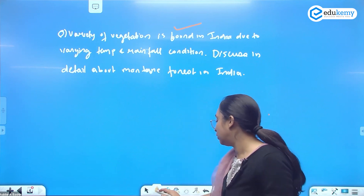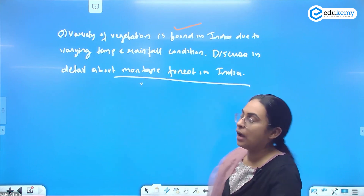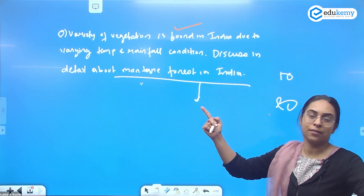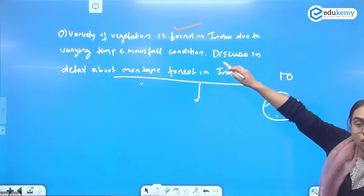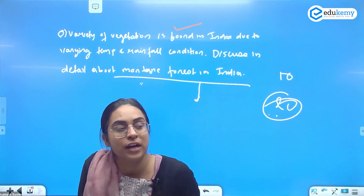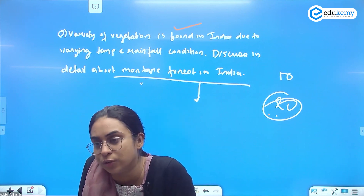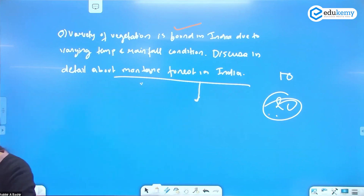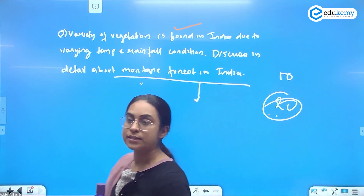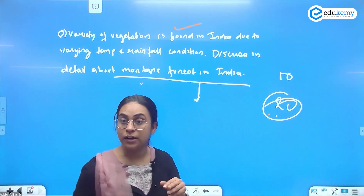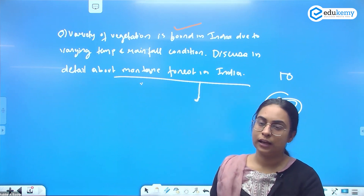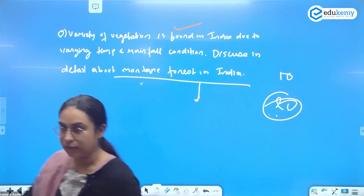How much to write depends on two things: how much scope the question has and the marks allotted. If it's a 20-mark question and the second part is detailed, I will not over-elaborate the first part. If there's a directive word with the first statement, I give it good treatment. If the second statement's scope is very big, I may just put the first part in a diagram. That's the approach.